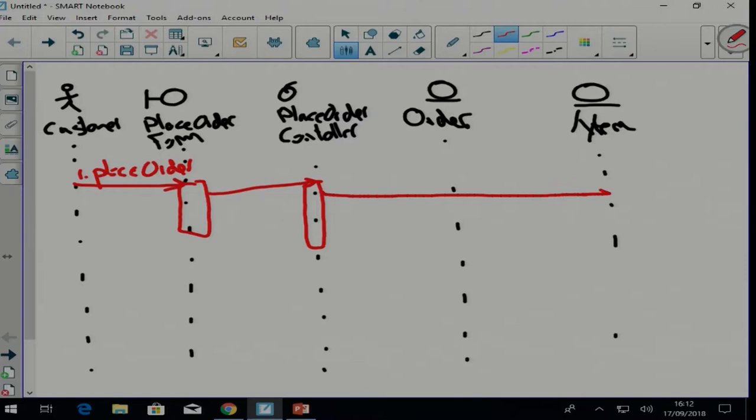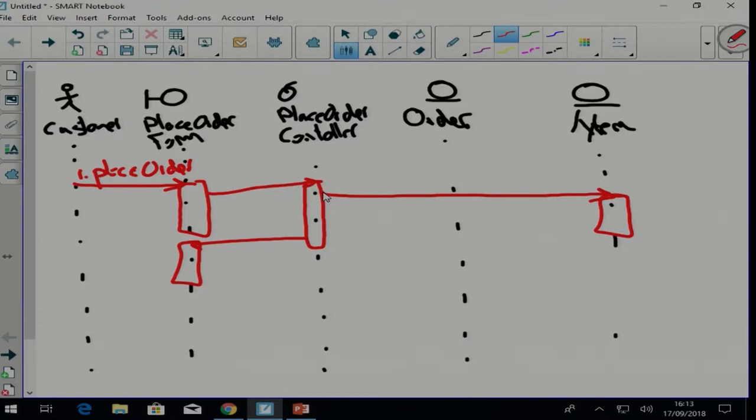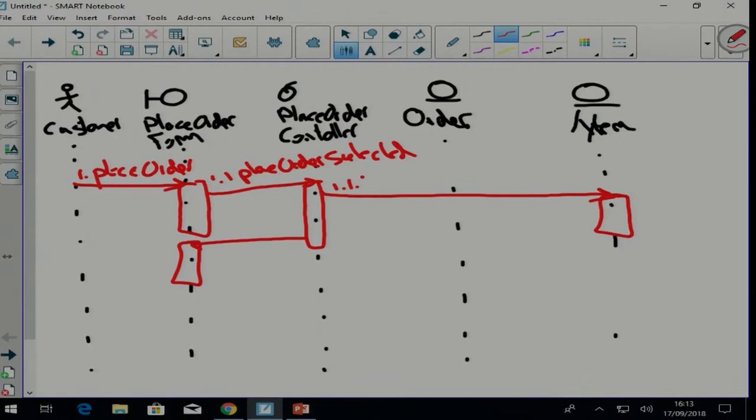And then what needs to happen next? The system is now going to go in. So place order was selected. What is happening next? The system needs to retrieve the items on special. Retrieve specials. Display specials.